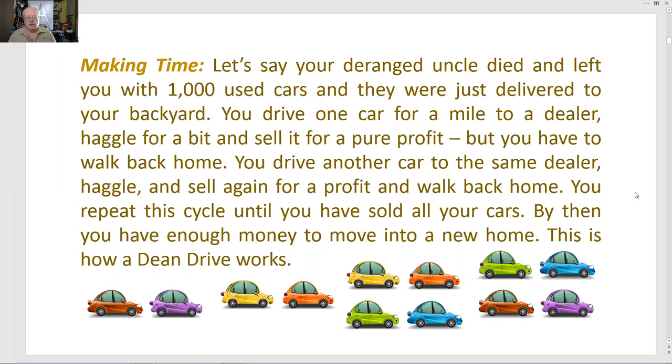You drive one car for a mile to a dealer, haggle for a bit, and sell for a pure profit. But you have to walk back home. You drive another car to the same dealer, haggle, and sell again for a profit, and walk back home. You repeat this cycle until you've sold all of your cars. By then you have enough money to move into a new home. This is how a Dean Drive works.